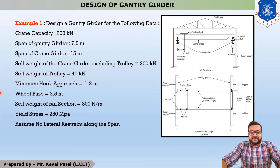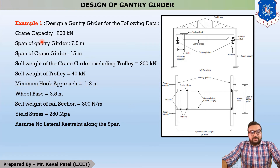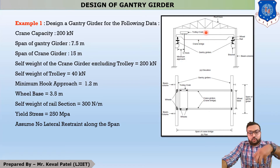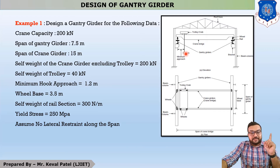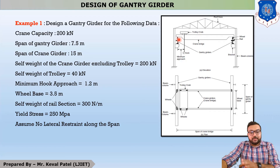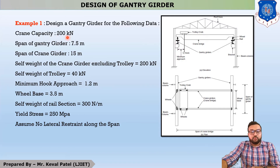Now we are moving to example number one: design of a gantry girder for the following data. You can see the elevation and the plan. The first data point is crane capacity = 200 kN. This means the maximum capacity of this crane to lift load is 200 kN — this hook takes a load up to 200 kN. If you lift a load greater than 200 kN, this crane cannot handle it. Whenever you design a gantry girder, you design for the maximum load, which is 200 kN in this example.